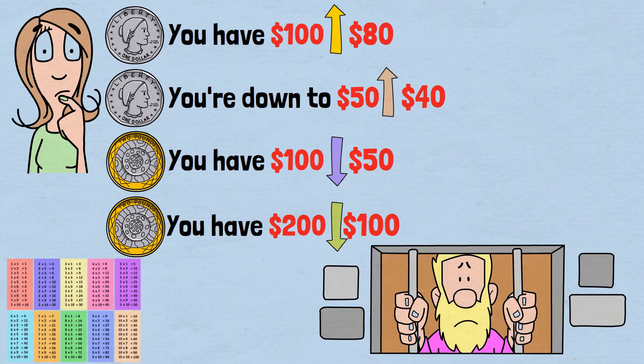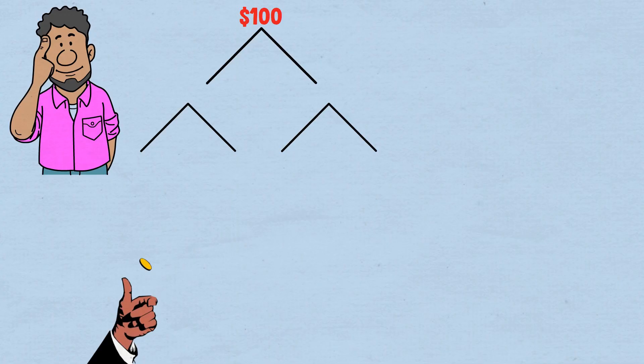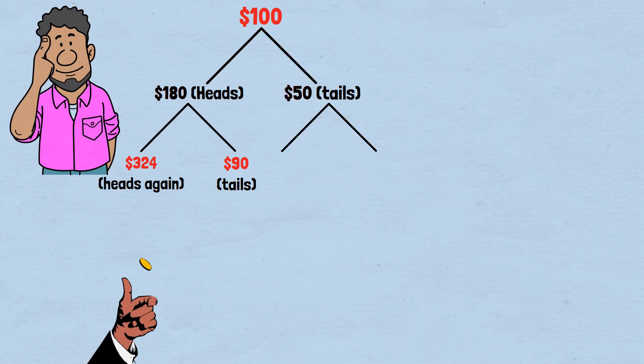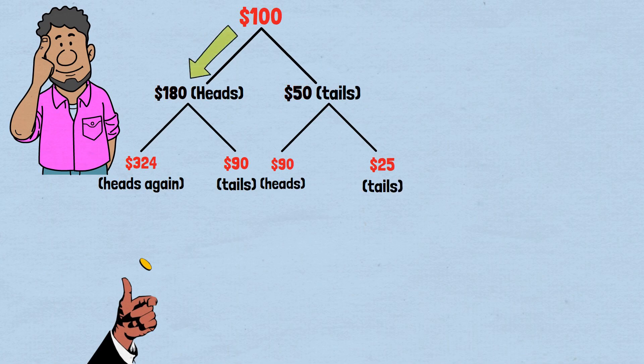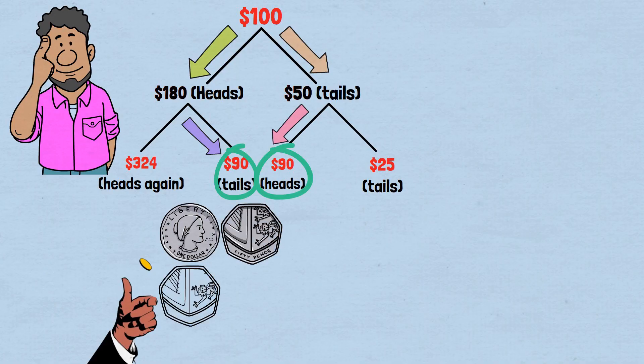Imagine we map out all possible outcomes like branches on a tree. We start at $100. After one flip, we can reach either $180 heads or $50 tails. From $180, we can reach $324 heads again or $90 tails. From $50, we can reach $90 heads or $25 tails. Notice something crucial. There are multiple paths to reach $90. And this becomes the most common outcome because it can be reached by any combination of equal heads and tails.